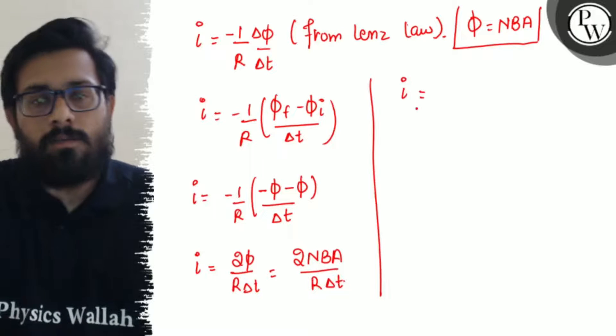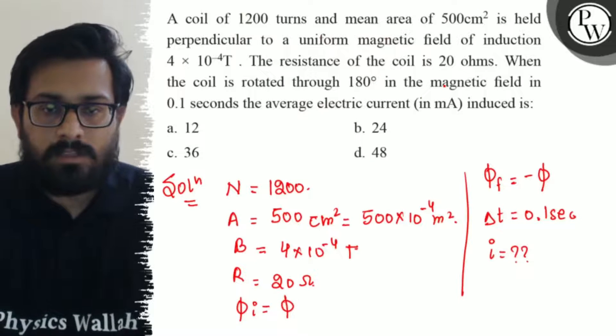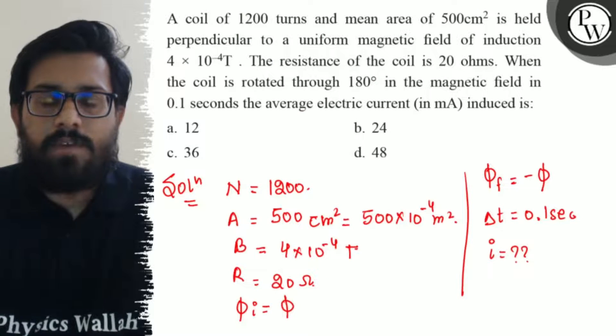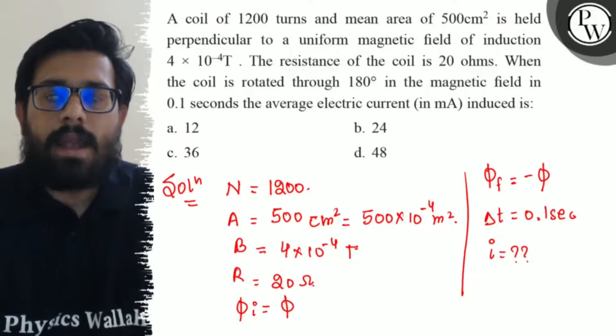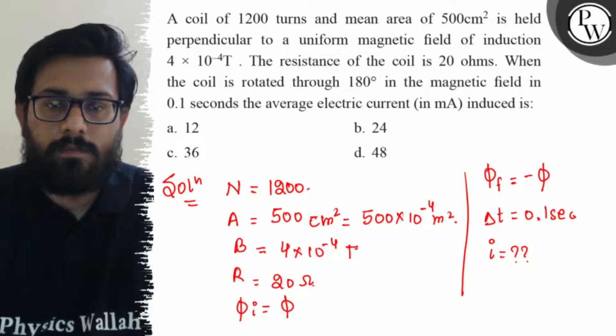So the value of i will be 2 × number of turns, which is 1200, area is 5×10⁻², magnetic field is 4×10⁻⁴, resistance is 20, and time is 0.1 second.